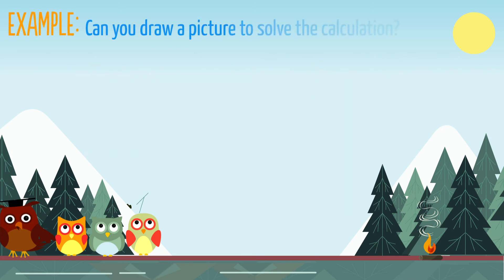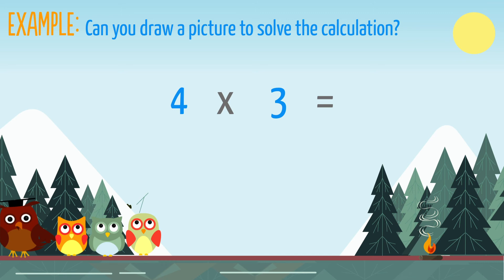Can you draw a picture to help solve this calculation? 4 times 3 equals... 4 groups of 3.